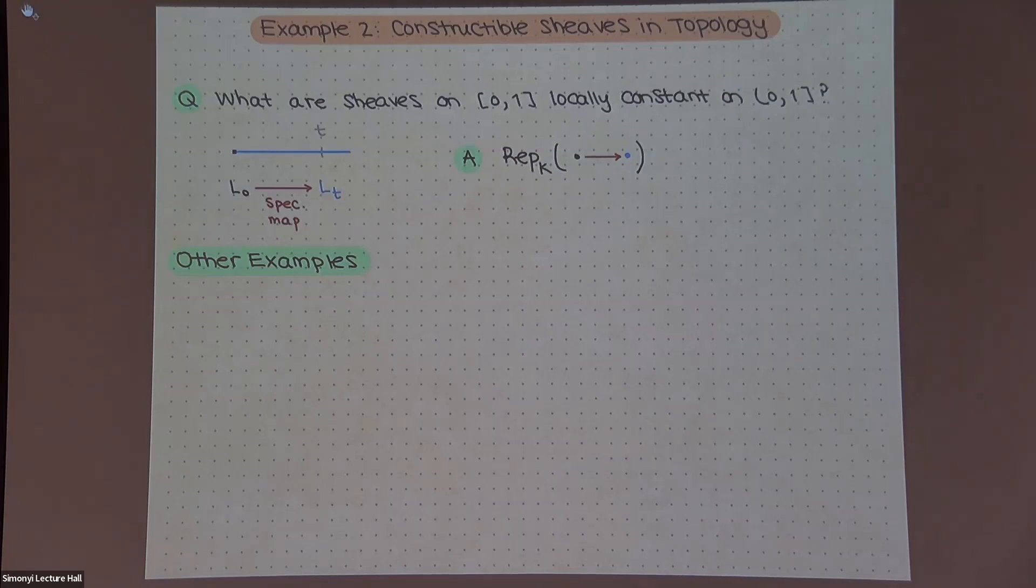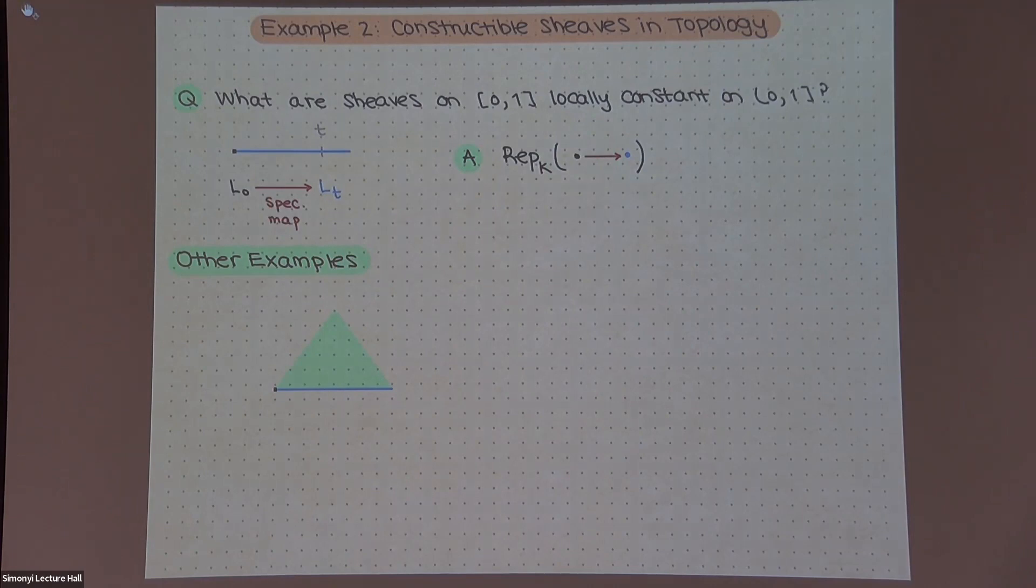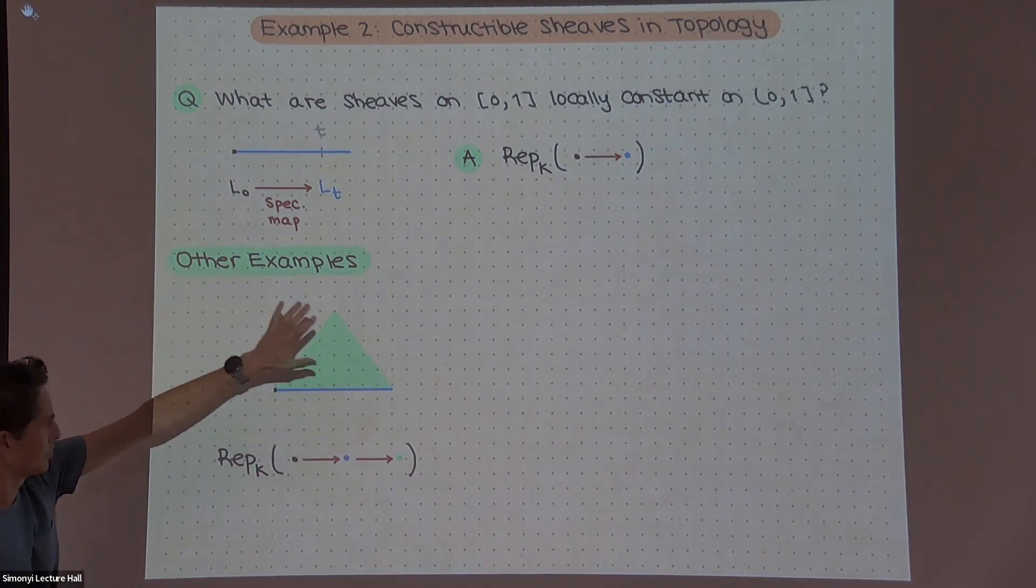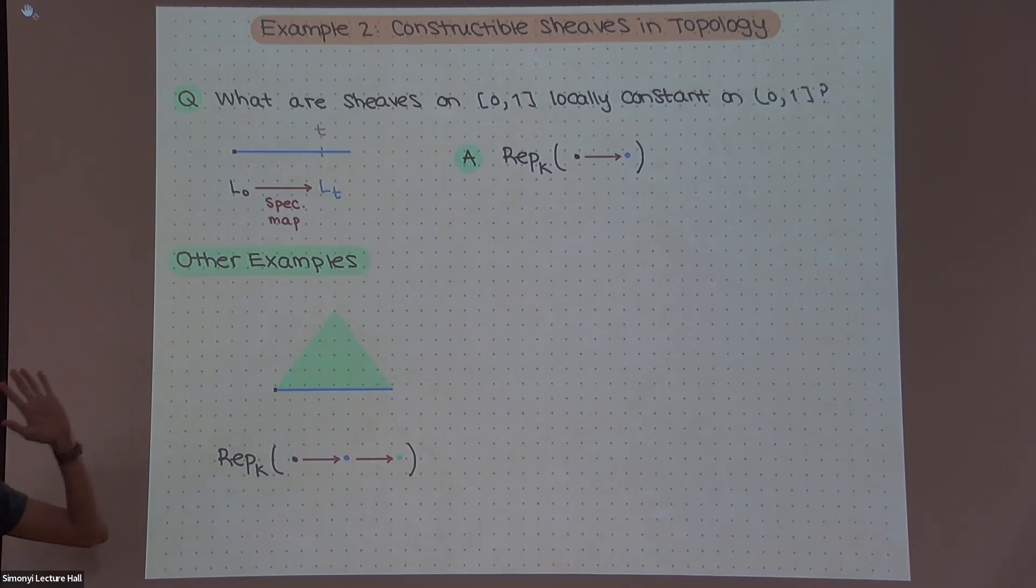And exactly the amount more data that you need to do is describe a map from this vector space associated to the lower dimensional piece to the vector space associated to the higher dimensional piece. In other words, this category of sheaves that are locally constant along this stratification is representations of the quiver that looks like this. So, you know, you can do other examples. For example, just make this slightly higher dimensional. We have a triangle broken up into these three colors, and you can ask, what is a sheaf that is locally constant on each of these three pieces?